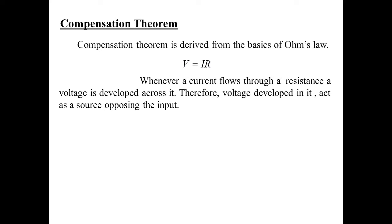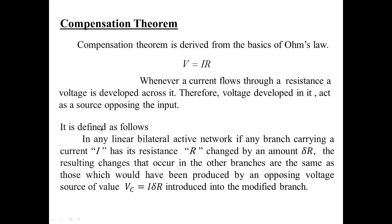In order to understand this, the Compensation Theorem is defined as: in any linear bilateral active network, if any branch carrying a current I has its resistance R changed by an amount delta R, the resulting changes that occur in the other branches are the same as those which would have been produced by an opposing voltage source of value Vc — the Compensation Voltage — equal to I times delta R, introduced into the modified branch.